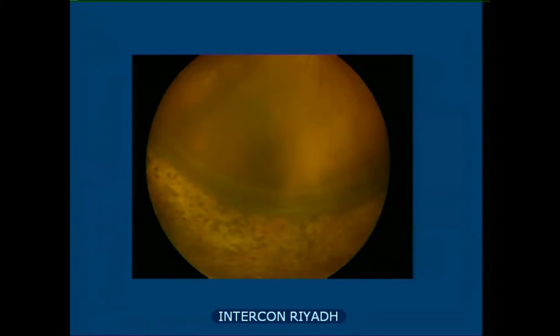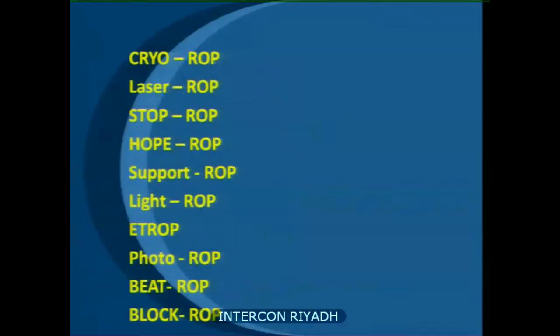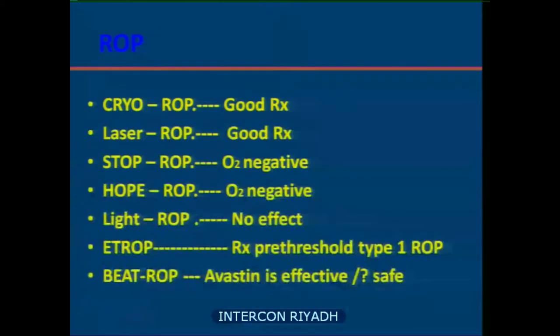Don't forget the late complications — not only the retina. The patient can have strabismus or squint, amblyopia, and other problems. Once we control the retinopathy, we give follow-up appointments with a pediatric ophthalmologist for refraction. A good number of premature babies, even without retinopathy, will end up having myopia and refractive error that needs correction.